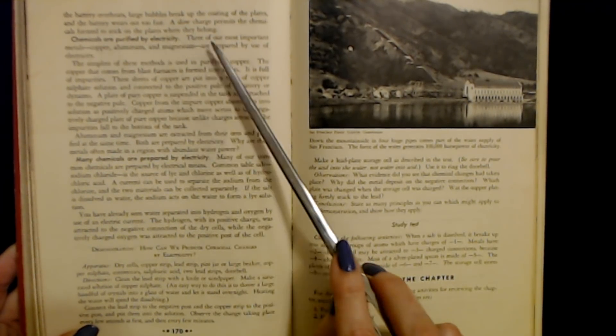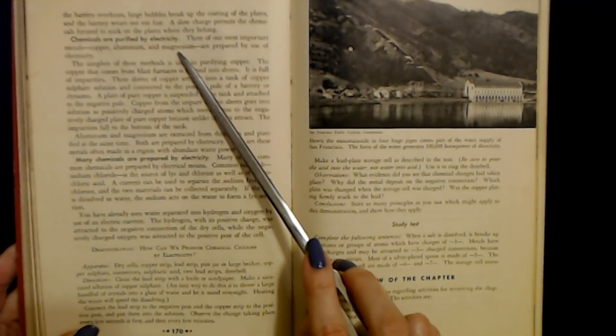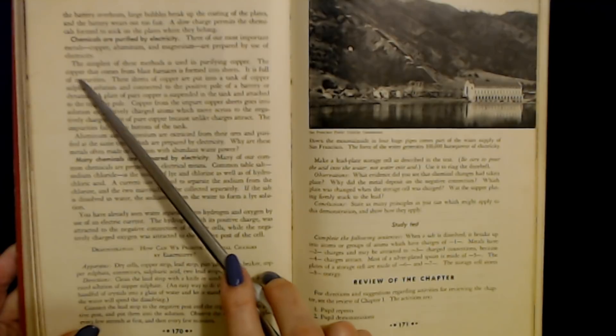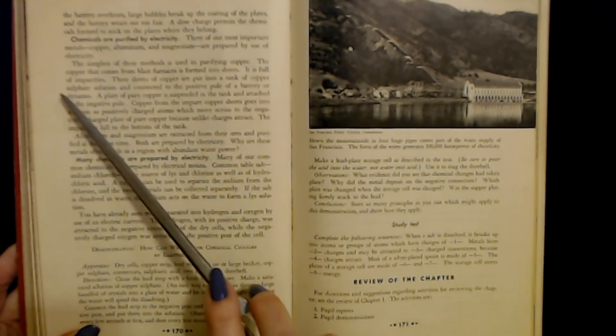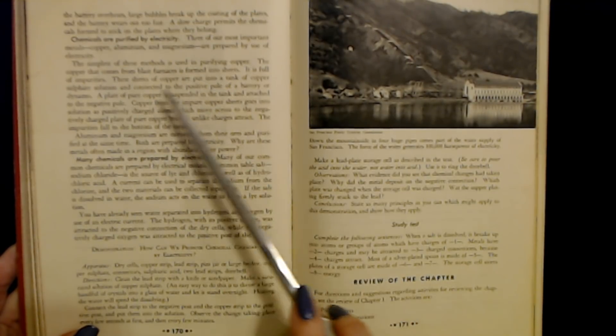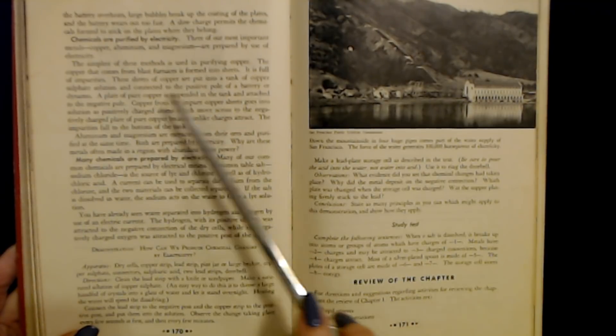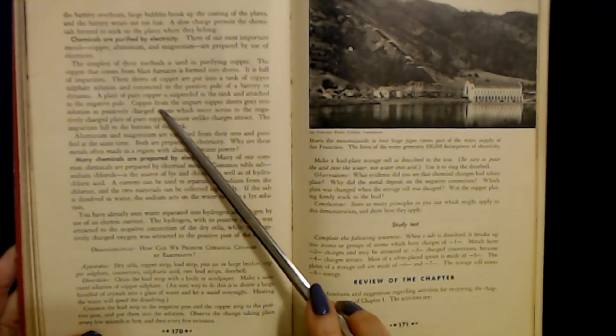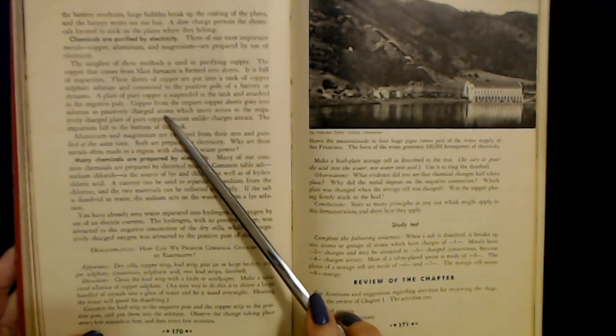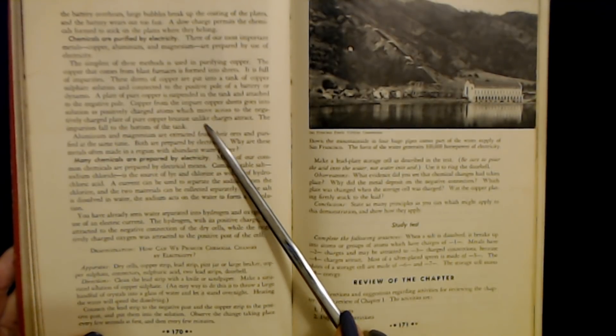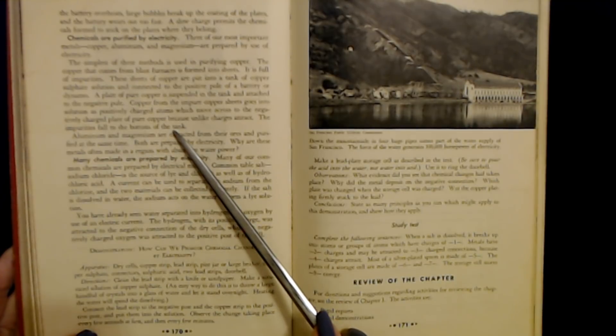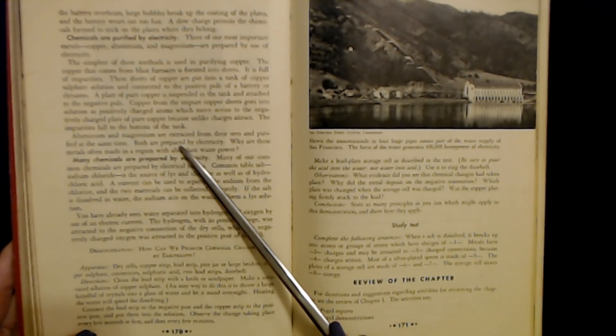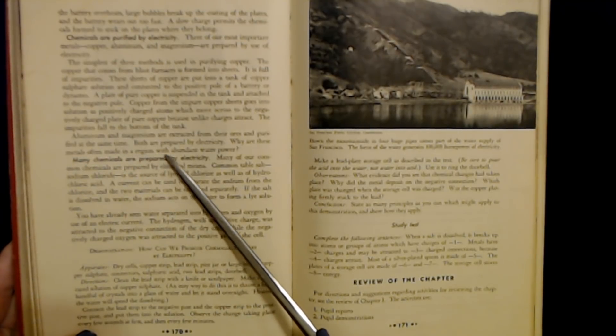Chemicals are purified by electricity. Three of our most important metals—copper, aluminum, and magnesium—are prepared by use of electricity. The simplest of these methods is used in purifying copper. The copper that comes from blast furnaces is formed into sheets. It is full of impurities. These sheets of copper are put into a tank of copper sulfate solution and connected to the positive pole of a battery or dynamo. A plate of pure copper is suspended in the tank and attached to the negative pole. Copper from the impure copper sheets goes into solution as positively charged atoms which move across the negatively charged plate of pure copper because unlike charges attract. The impurities fall to the bottom of the tank. Aluminum and magnesium are extracted from their ores and purified at the same time. Both are prepared by electricity. Why are these metals often made in a region with abundant water power?